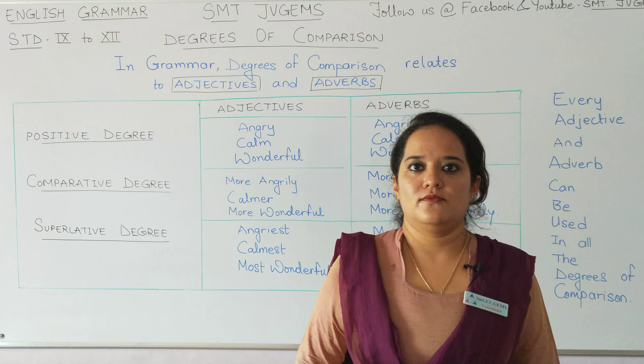In the comparative degree, we cannot write angrily as angrier — angrily can be used here as an adverb also. As it is an irregular adverb, we use 'more' with it: more angrily. The next word is calm — so more calmly. Calmly, as it is an irregular adverb, we use 'more' with it. More wonderful — wonderful cannot be wonderfuller, so it is an irregular adjective and we use 'more'. And here also, more wonderfully.